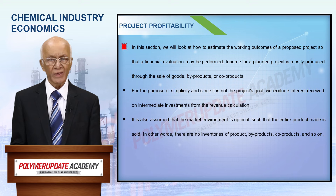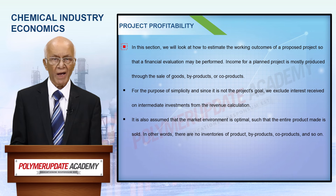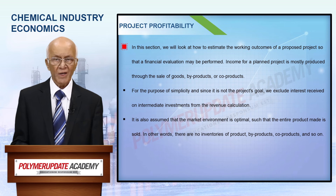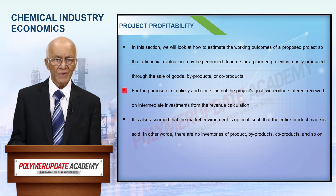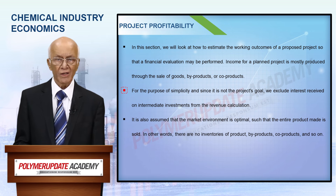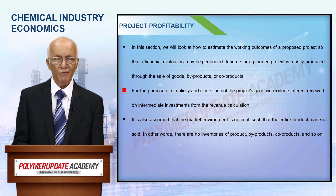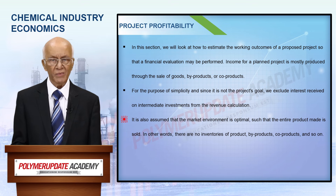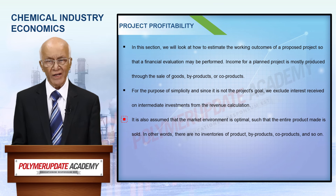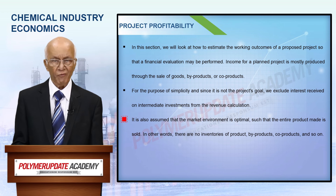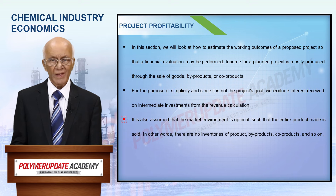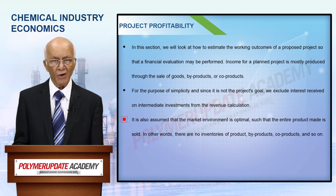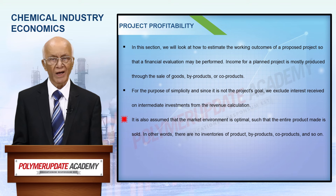For a proposed project, income is essentially generated from the sale of products, by-products, or co-products. During the estimation of income, we do not consider interest earned on intermediate investments for the sake of simplicity and also because it is not the objective of the project. It is further assumed that the market scenario is an ideal one, whereby the product manufactured is sold in totality. In other words, inventories of product, by-product, co-products, etc. are nil.